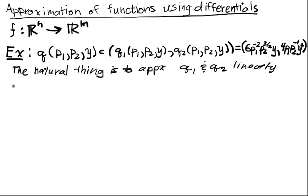If we did that then we would have Q1 of P1 plus delta P1. I'm going to write it out abstractly here and then we'll look at a specific case for computing that. Delta P2, Y plus delta Y. So this is just Q1. Well we know how to approximate this guy linearly.